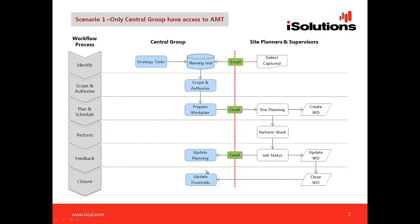Once the work order is closed, that information is fed back to AMT, so both the status of the work and the financials are updated. In this scenario there are three main communication points: the initial defect capture, sending the authorized work to the site, and the feedback once the site has performed it.